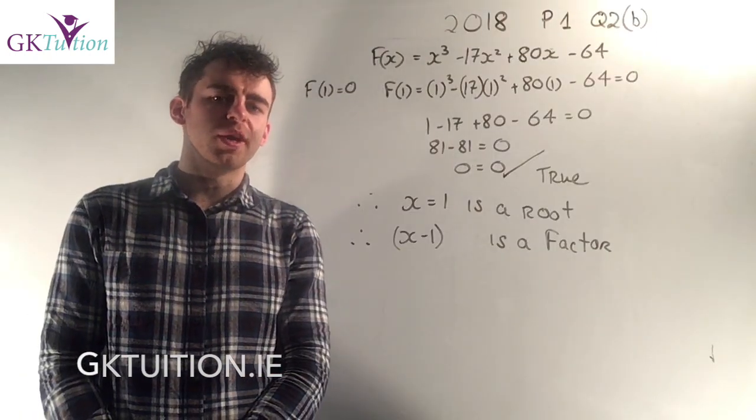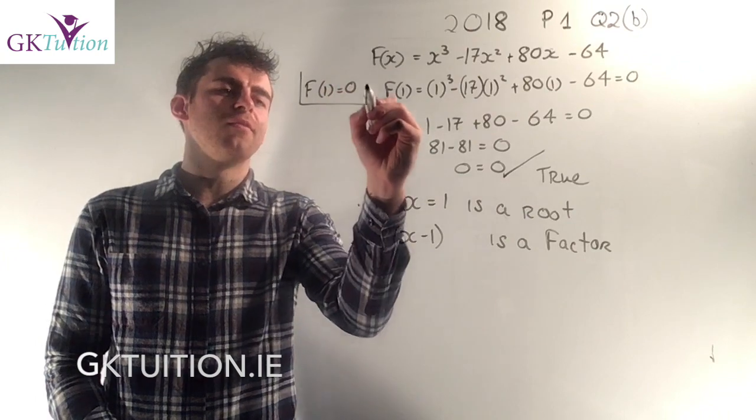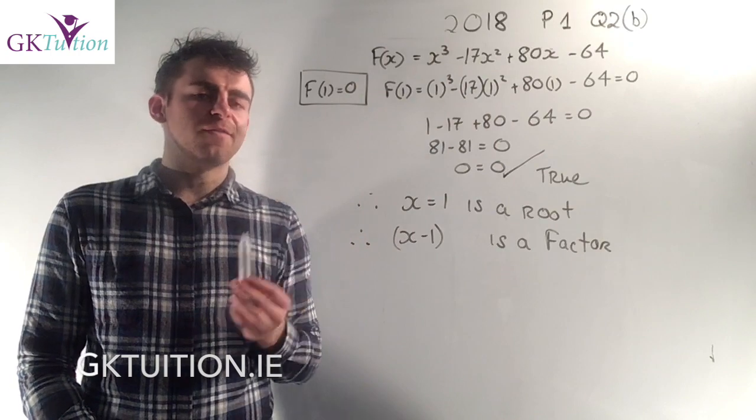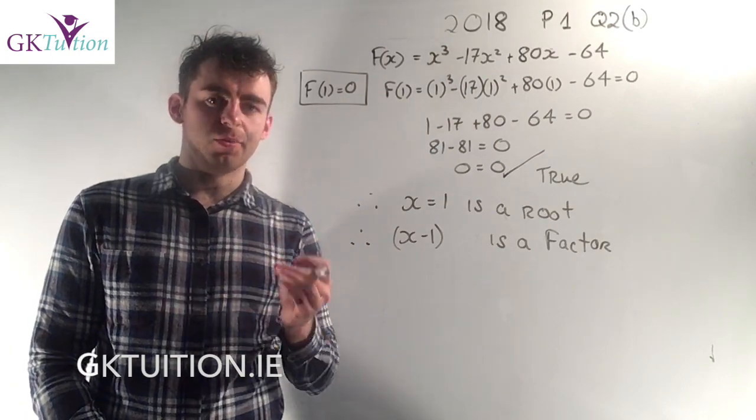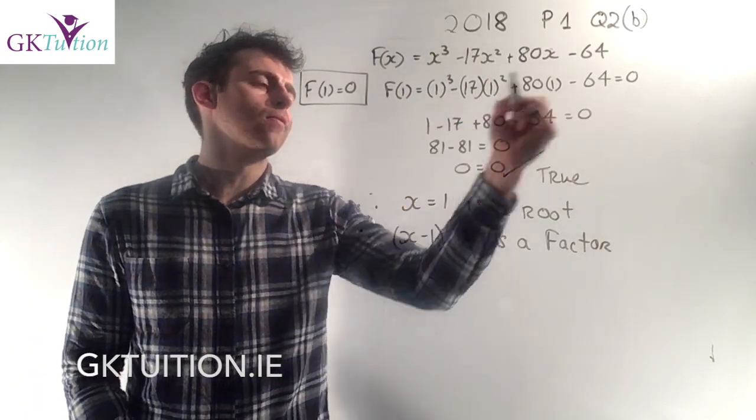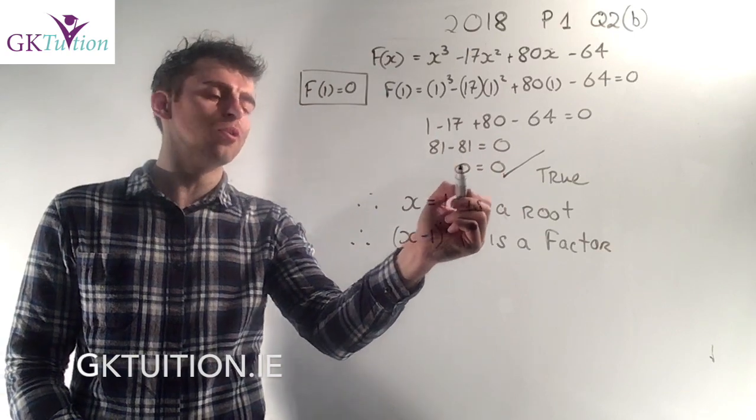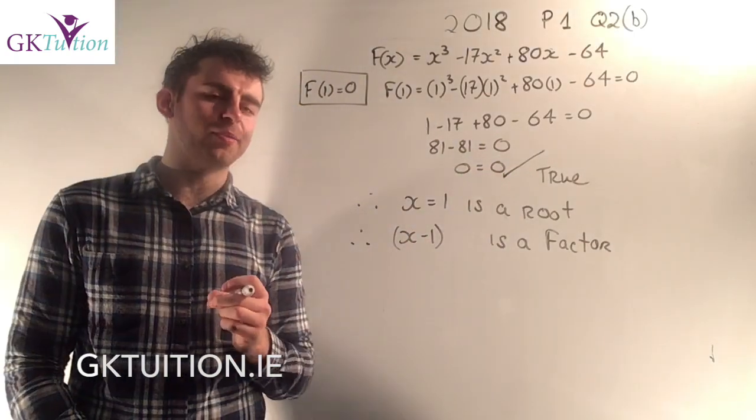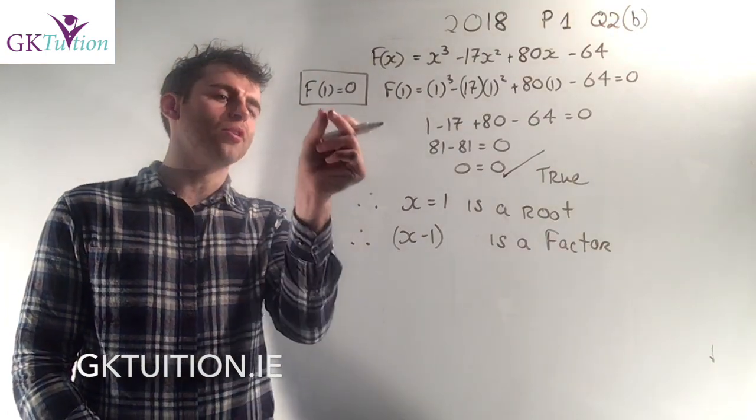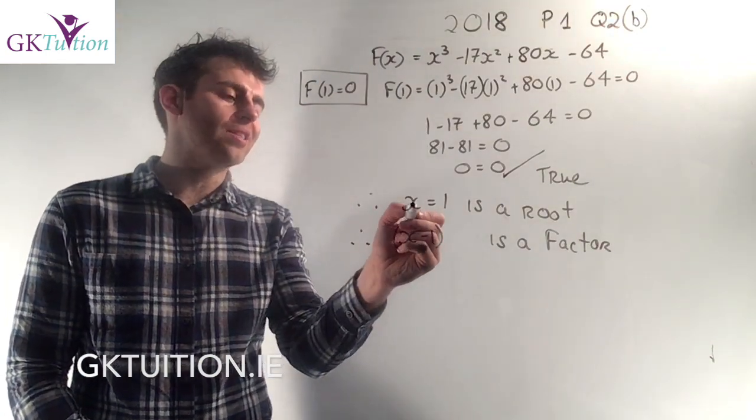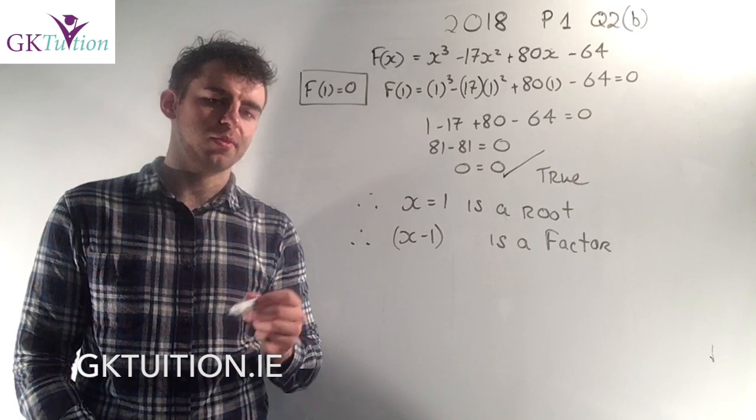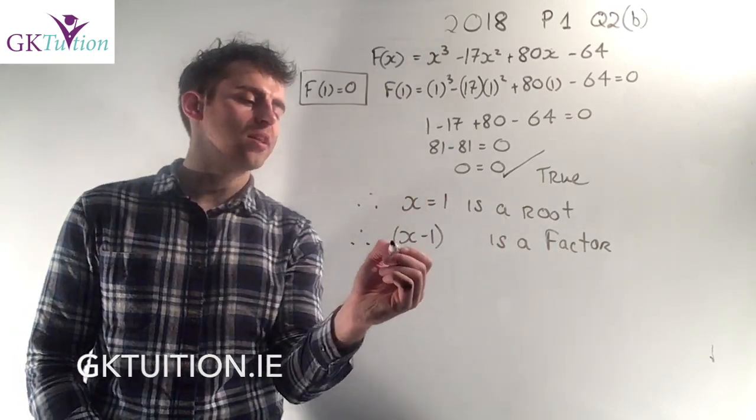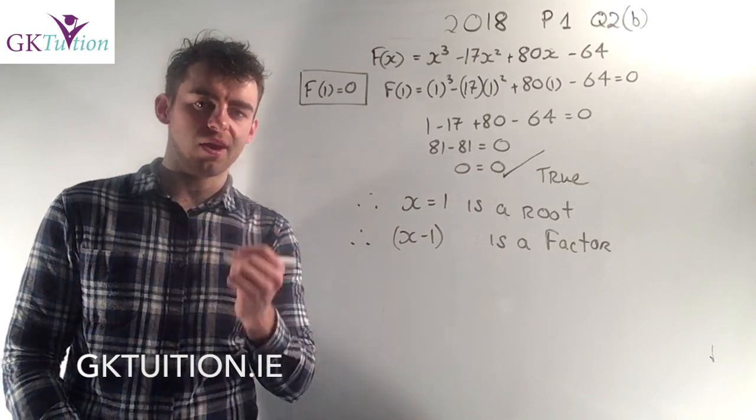In part B of this question we're asked to prove that f of 1 equals zero. I know f of x equals this, so to get f of 1, everywhere there's an x I just sub in a 1. If you sub in 1 for all of these and work your way through it, you end up with 0 equals 0. So I would always get you to conclude, put a tick beside it, and say that it's true. Because f of 1 equals 0, that means x equals 1 is a root. If x equals 1 is a root, then you can bring the 1 back across, which means that x minus 1 is the corresponding factor.